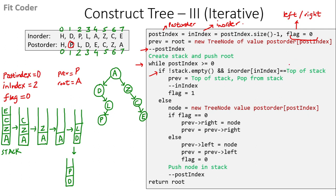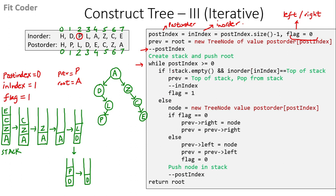In the next iteration, top of the stack is P and the inorder index is also pointing to P — equal. We set previous to P, pop from the stack, decrement inindex to 1, and set flag to 1. In the following iteration, top of the stack is D and the inorder index is also D — equal. We set previous to D, pop from the stack (stack is now empty), decrement inindex to 0, and set flag to 1.